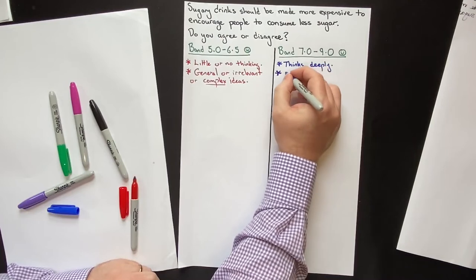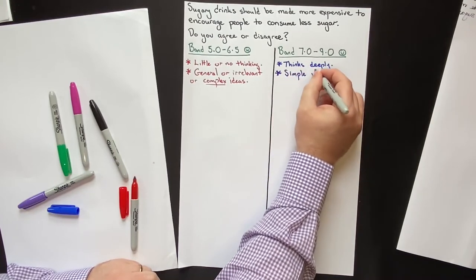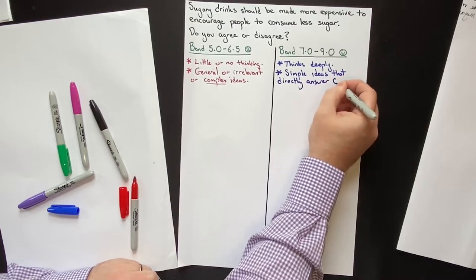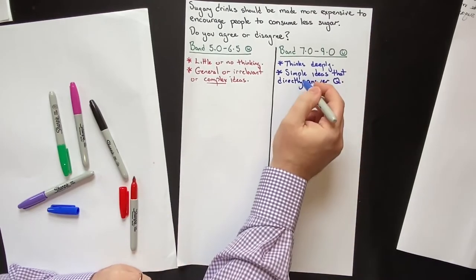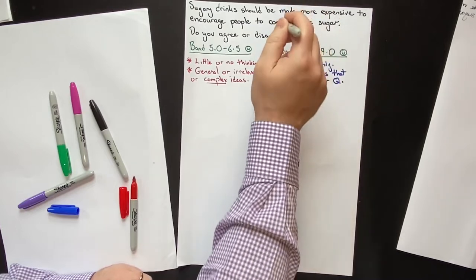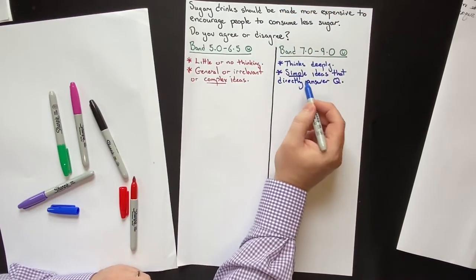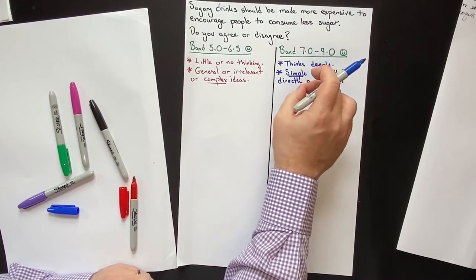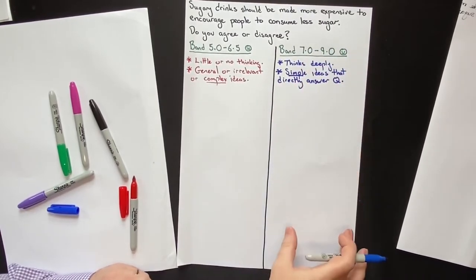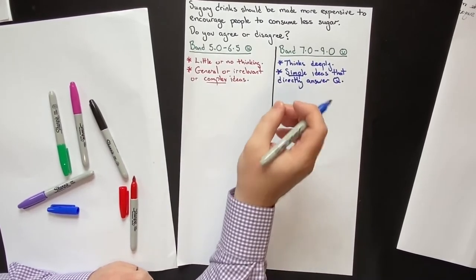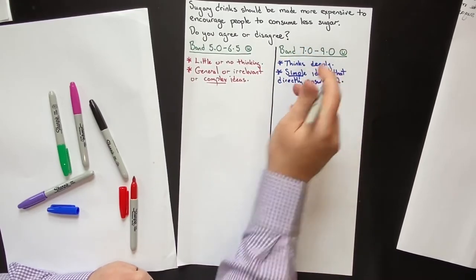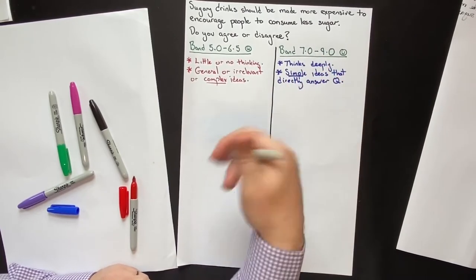The Band 7, 8, and 9 student generates simple ideas that directly answer the question. These ideas are easy and quick to think of, they are relevant, and they directly do what you're supposed to do — answer the question. Starting off with a simple, easy-to-understand seed means you'll be able to write clearly about it and the examiner will understand your idea. IELTS is a communications test — by generating simple ideas, you make your job easier and the examiner's job much easier.